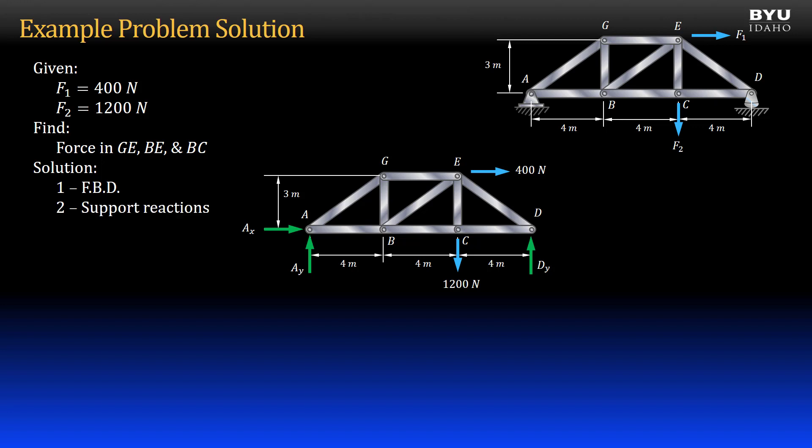I have replaced the supports with support reaction forces. Next, we will solve for the support reactions using three equilibrium equations. Summing forces to zero in the x direction, we see that reaction Ax is 400 newtons, pointing to the left.